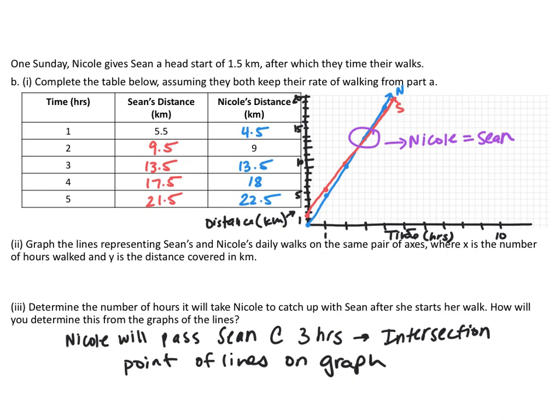Given the information, I finished filling out the table. After 2 hours, Sean would be at 9.5 kilometers, then 13.5, 17.5, 21.5, just adding the 4 kilometers per hour every single time. Nicole would be the same as the one that she was before, so 4.5, 9, 13.5, 18, 22.5, adding 4.5 kilometers every single time.